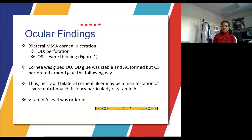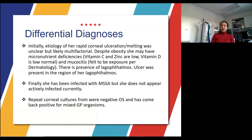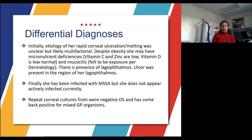We thought her rapid bilateral corneal ulceration and keratomalacia were likely multifactorial. Despite her obesity, she had micronutrient deficiencies — vitamin C was low, zinc was low, and vitamin D was low. There was also a presence of lagophthalmos, and the ulcer was present in the region of her lagophthalmos. She had been previously infected with MSSA, but there was no current active infection. Repeat corneal cultures were negative in the left eye but came back positive for mixed gram-positive organisms in the right eye.